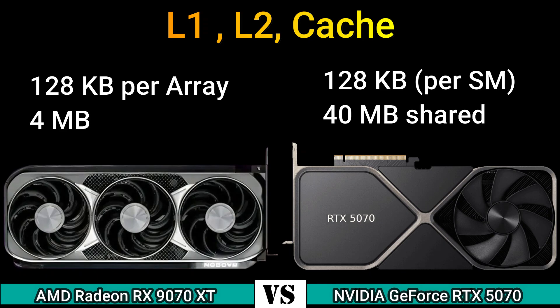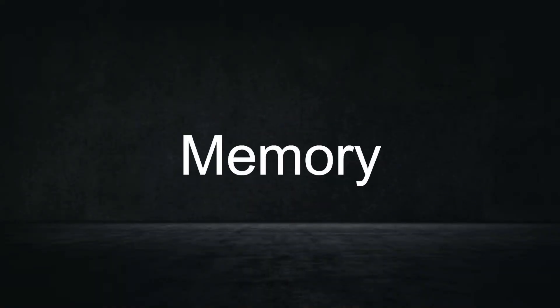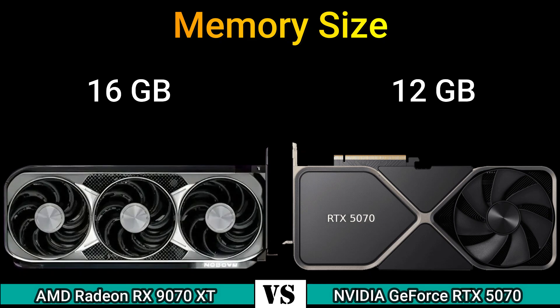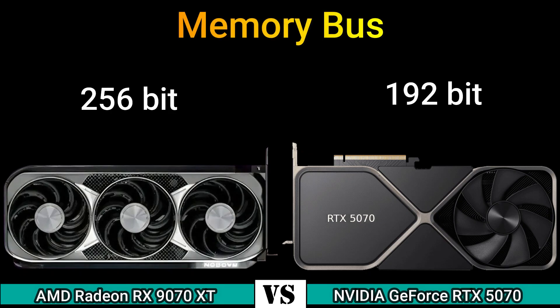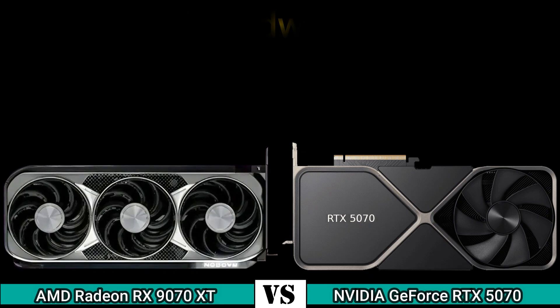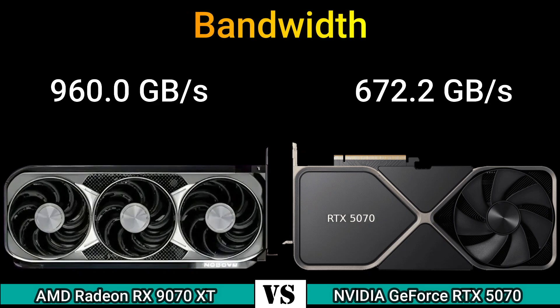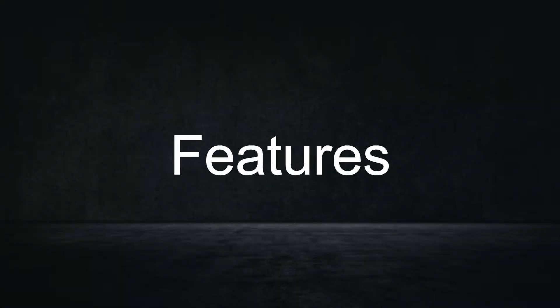Memory size: 16 GB and 12 GB. Memory type: GDDR6 and GDDR7. Memory bus: 256-bit and 192-bit. Bandwidth: 960.0 GB/s and 672.2 GB/s.